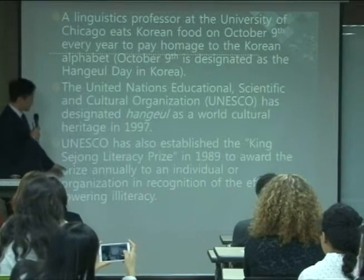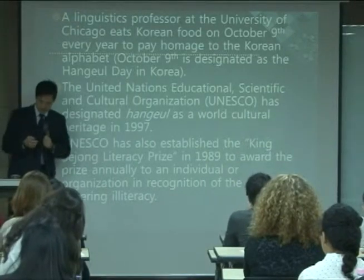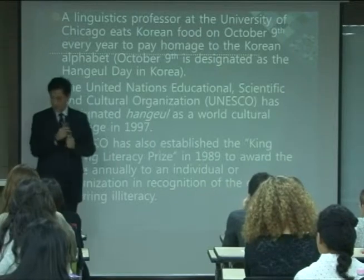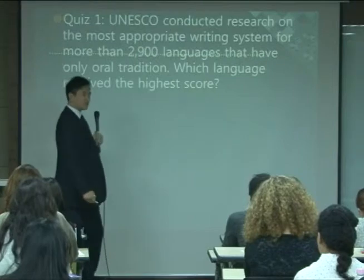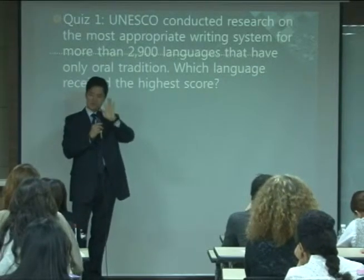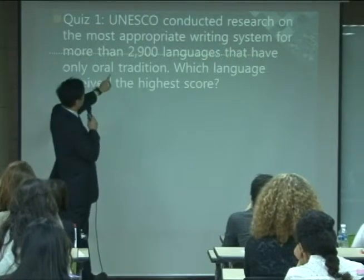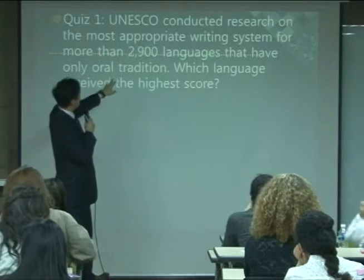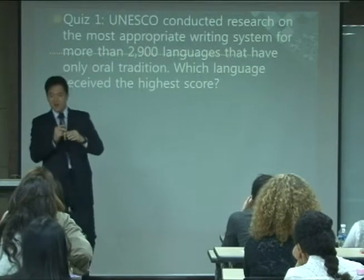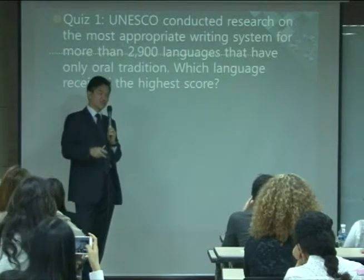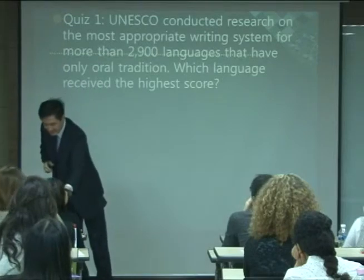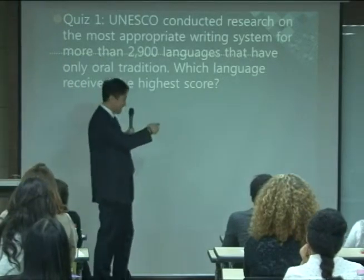UNESCO established the King Sejong Literacy Prize in 1989 to award annually to an individual or organization for efforts in lowering illiteracy. UNESCO also conducted research on the most appropriate writing system for more than 2,900 languages with only an oral tradition. Which language received the highest score? Korean.